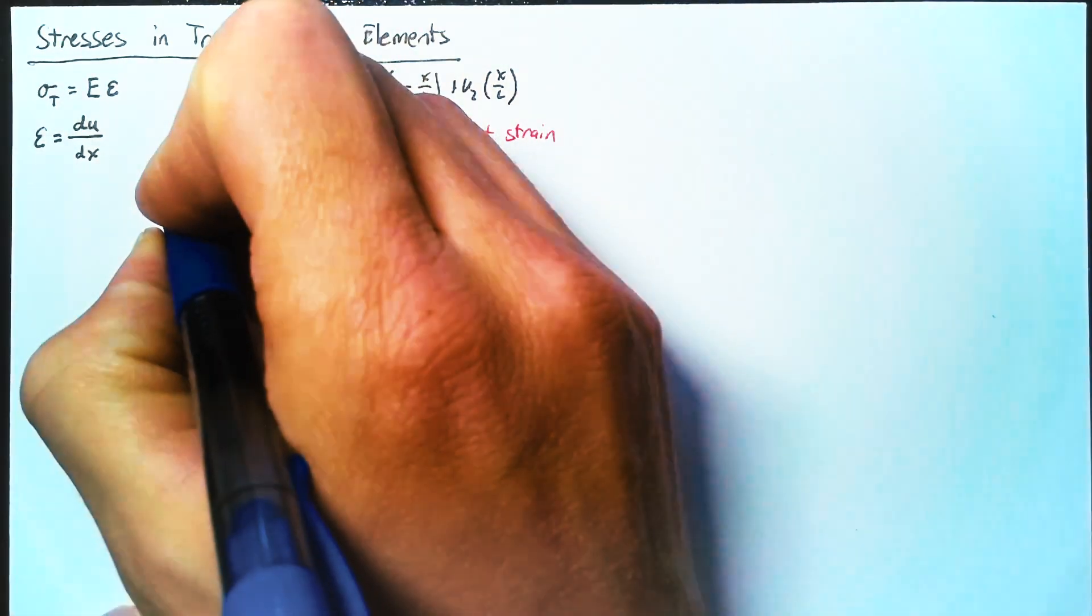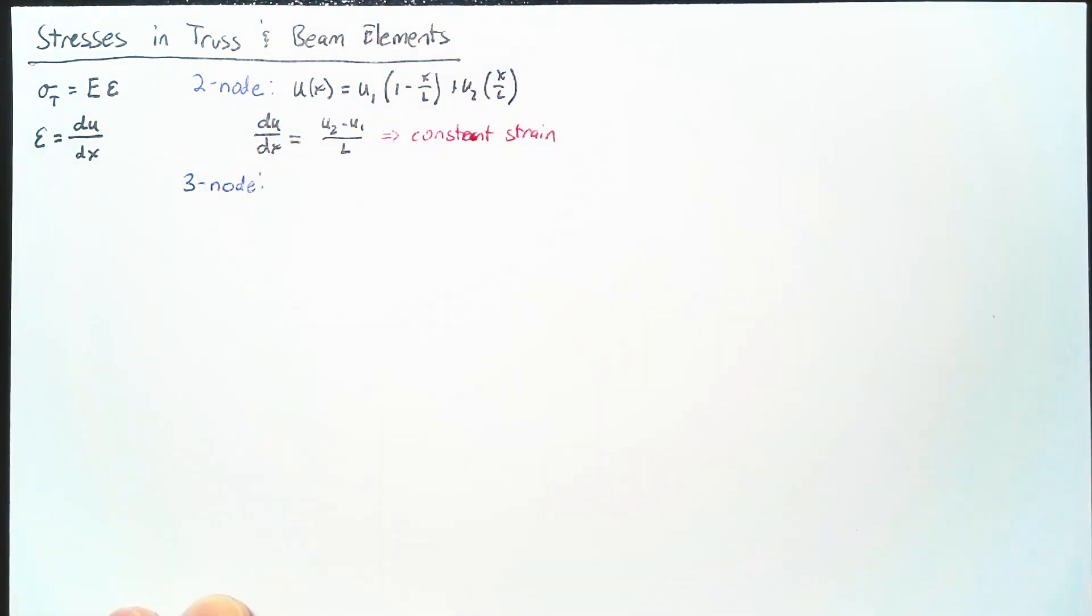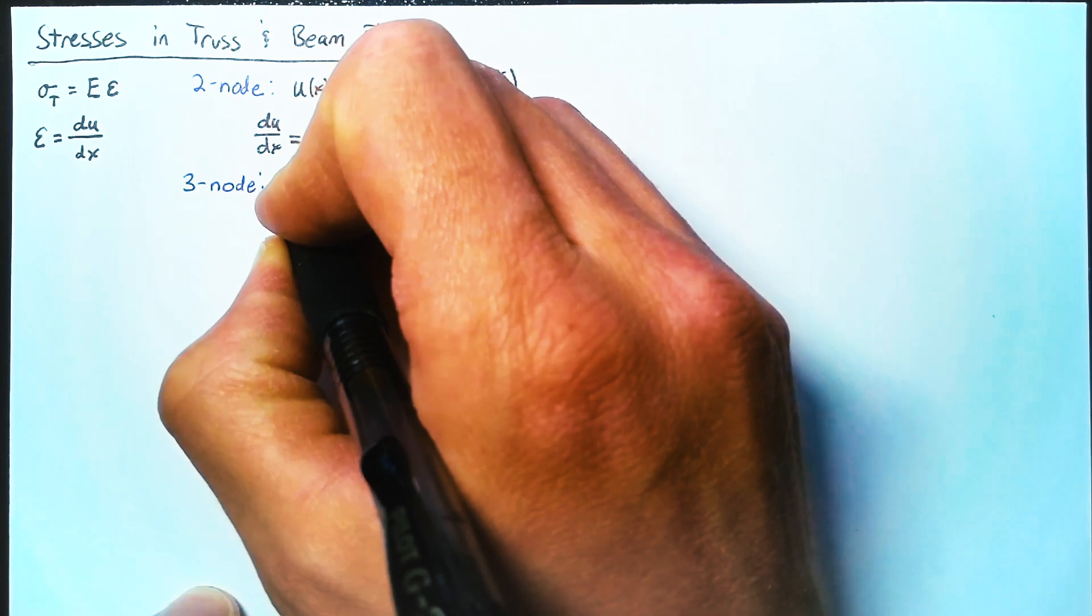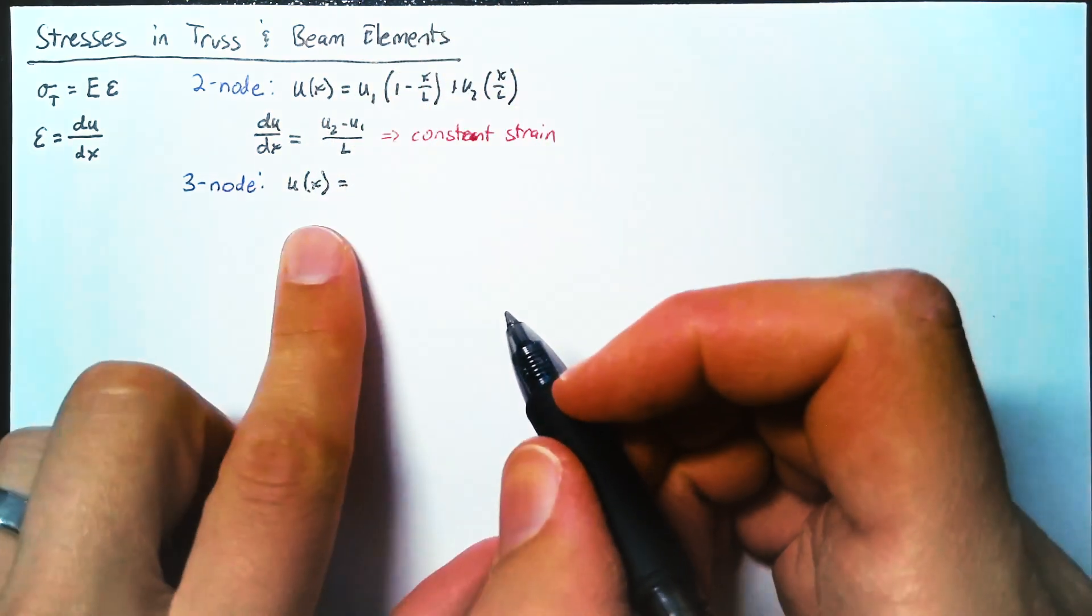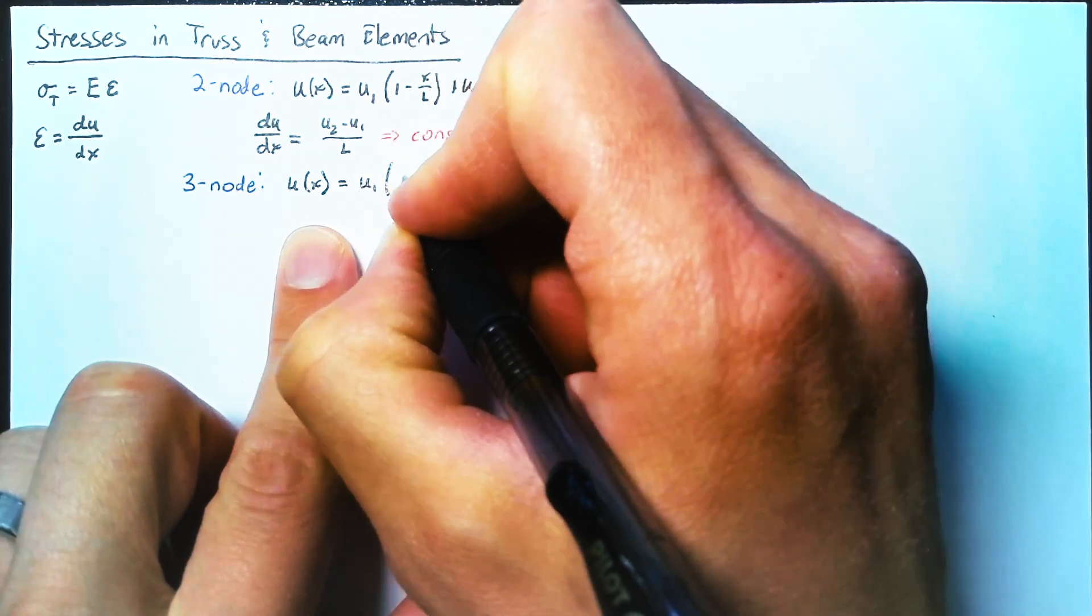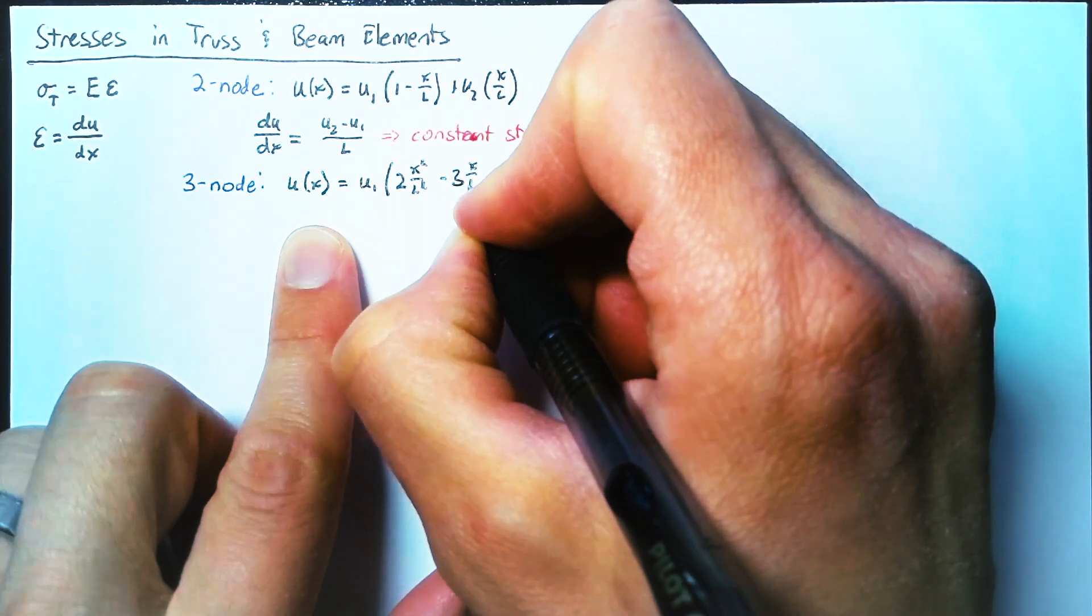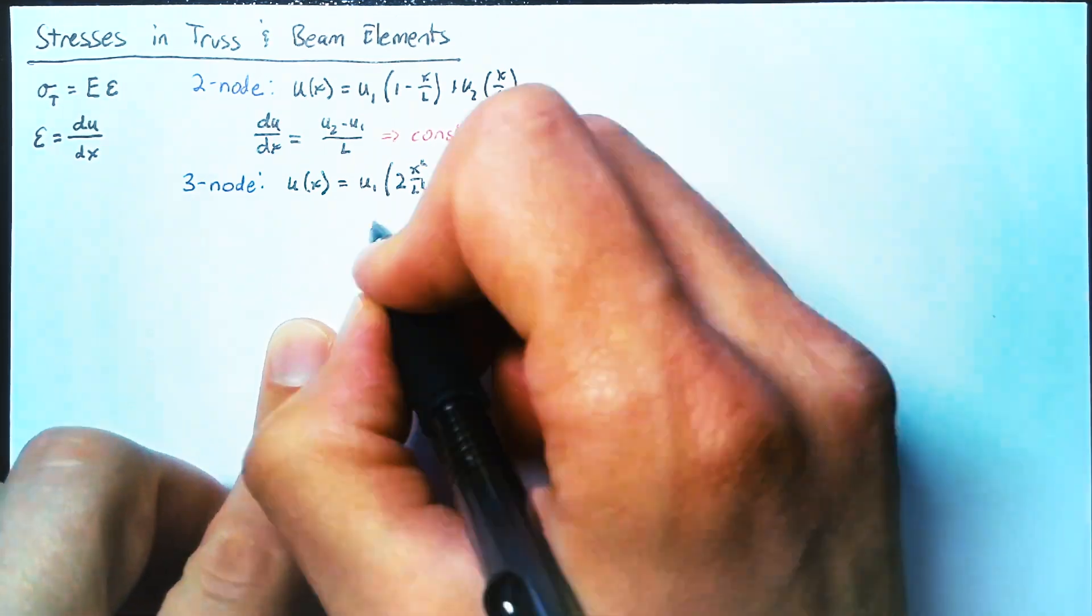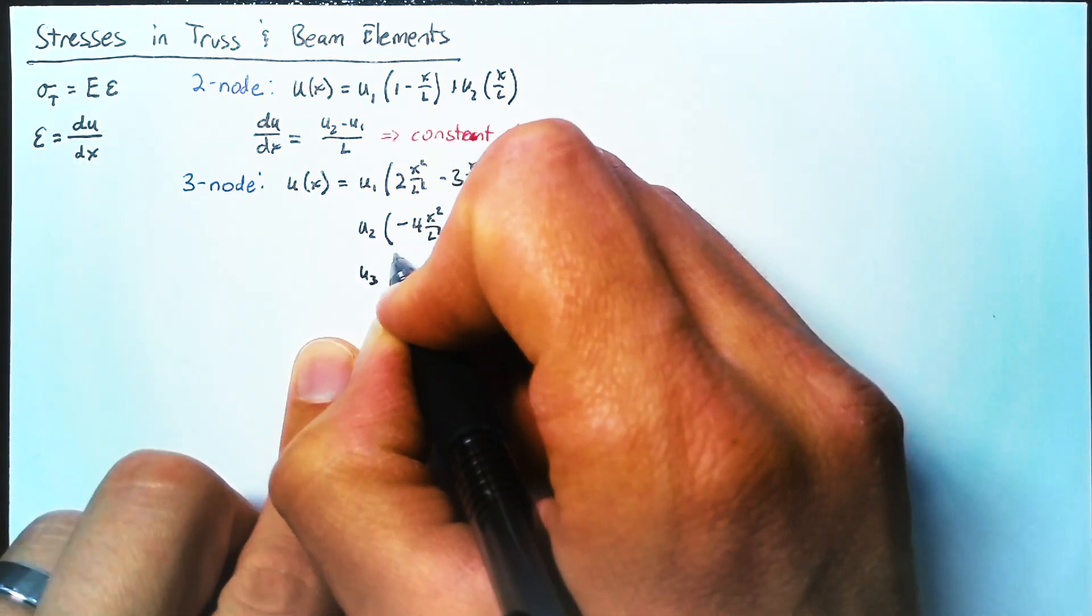Now things get a little more complicated whenever we move to our three-node element. And if you recall from our shape functions video, we found that the displacement on the element was equal to U1 times 2X squared over L squared minus 3X over L plus 1. And then we had similar equations for U2 and U3.